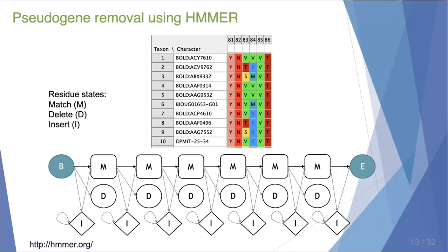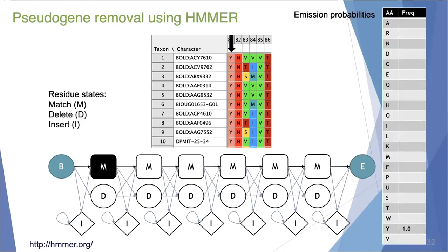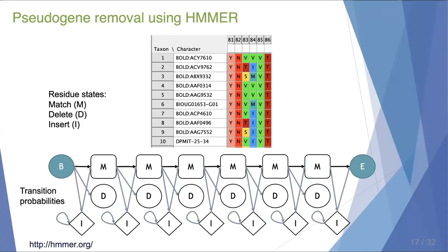The second method we use to find pseudogenes is a program called HMMER. HMM stands for hidden Markov model, and HMMER can help you build and use those HMMs for searching. The Markov model can be used to describe features in groups of related biological sequences. Here I'm showing a multiple sequence alignment where each column can exist in either a match, delete, or insert state. Each state is associated with its own set of emission probabilities — essentially the frequency of each residue in a particular column — and there are also transition probabilities associated with moving from one state to the next, shown by the arrows.